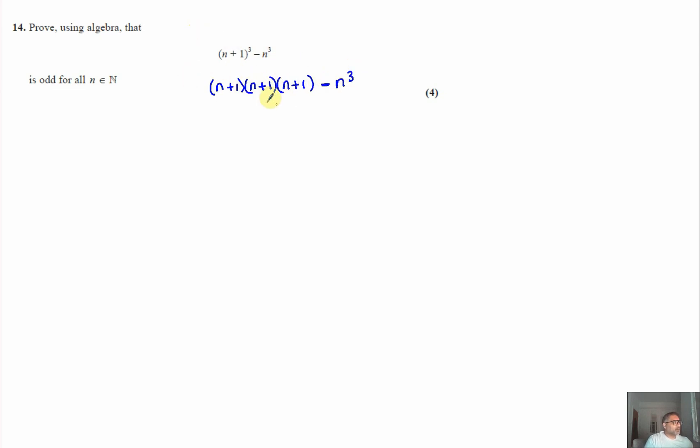First of all, just to test your basic algebra, can we expand and simplify triple brackets? I always start by expanding the first two. So n² + n + n + 2n + 1 and that needs to be multiplied by (n+1) and then subtract n³.